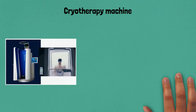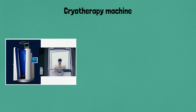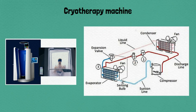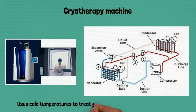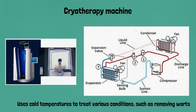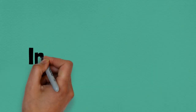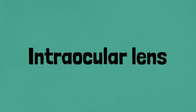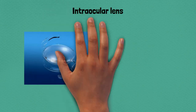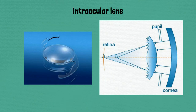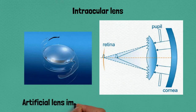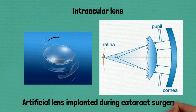Sixty-four: cryotherapy machine, uses cold temperatures to treat various conditions such as removing warts. Sixty-five: intraocular lens, an artificial lens implanted during cataract surgery.